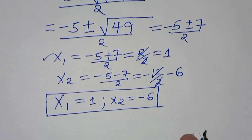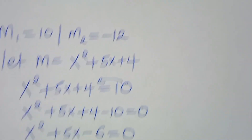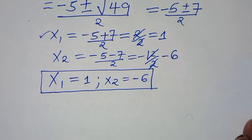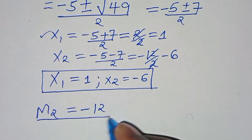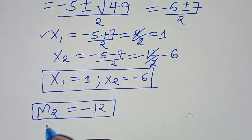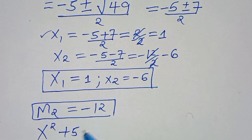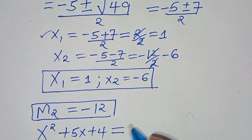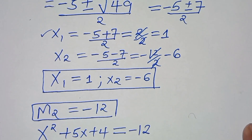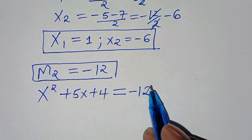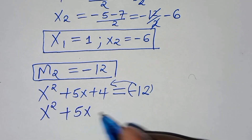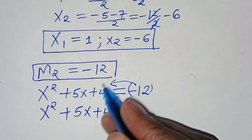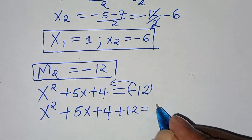Now for m₂ = -12: since m = x²+5x+4 = -12, taking -12 to the left-hand side gives x²+5x+4+12 = 0.